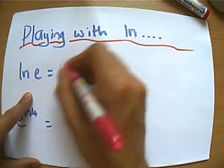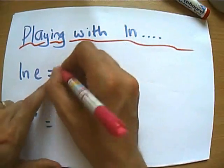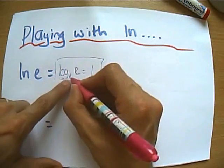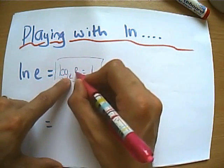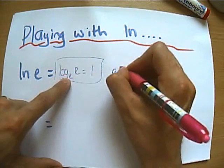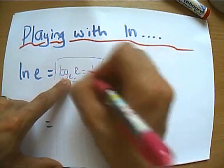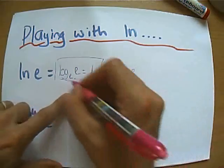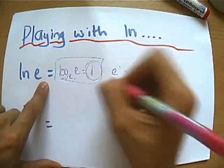But of course e to the power of 1 will give me e, so the answer to that is 1. And let's think about why that is, because if I'm given this, I could rewrite that as the power I raise e by to get e is 1. e to the power of 1 equals e, so ln of e is very simply 1.